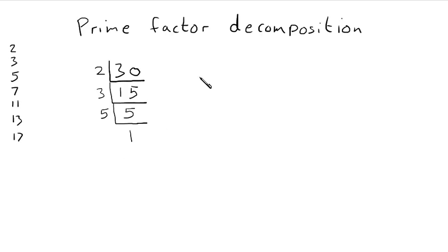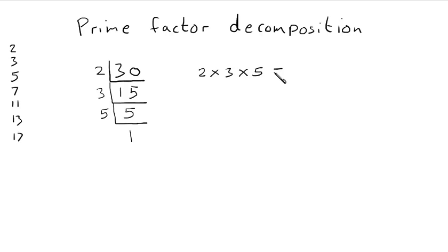We can use this to write the number as a product of its prime factors. Product means multiply, so the product of its prime factors means we multiply the prime factors 2, 3, and 5 together to make 30. So that is 30 written as a product of its prime factors. 2 times 3 is 6, and 6 times 5 is 30 — so that works.